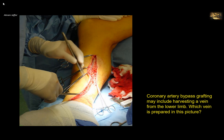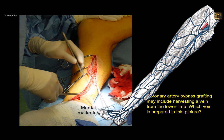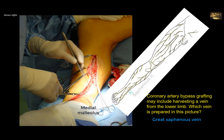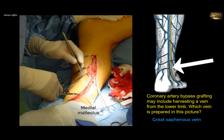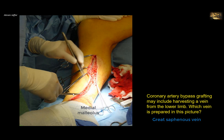Coronary artery bypass grafting may include harvesting a vein from the lower limb. Which vein is prepared in this picture? This is a skin incision on the medial side of the leg. Here is the site of the medial malleolus, and this is the place where the great saphenous vein can be cut down in front of the medial malleolus, or harvested — part of it taken out and used to bypass coronary arteries. Care should be taken because accompanying the vein at this location is the saphenous nerve. Remember that the small saphenous vein is located behind the lateral malleolus, while the great saphenous vein is located in front of the medial malleolus.